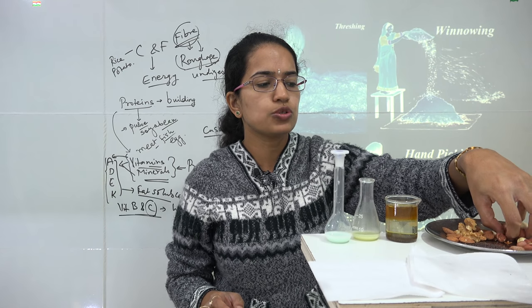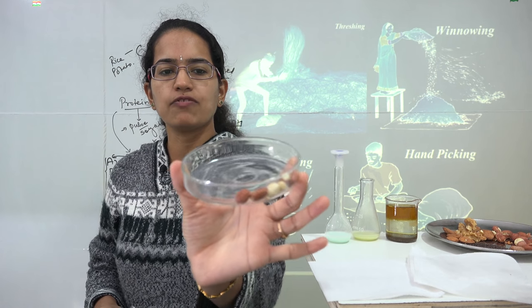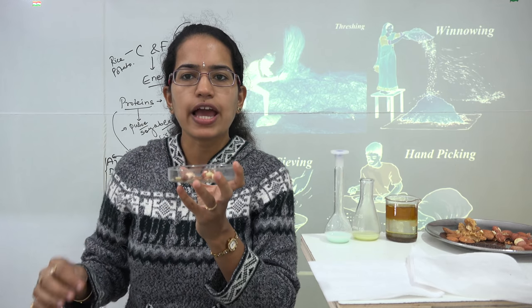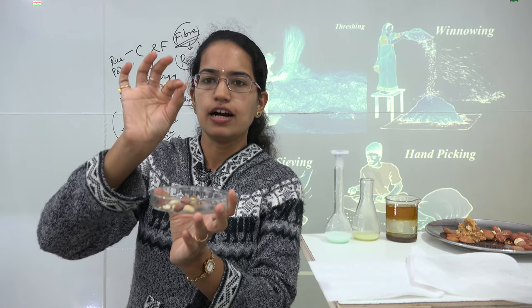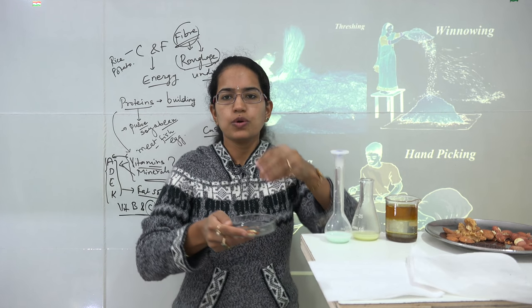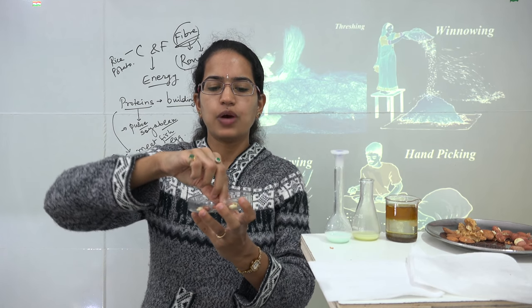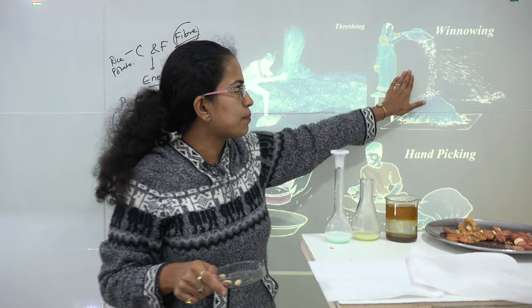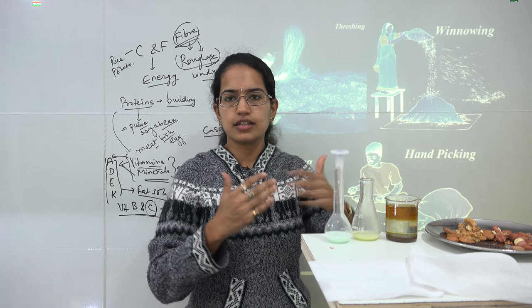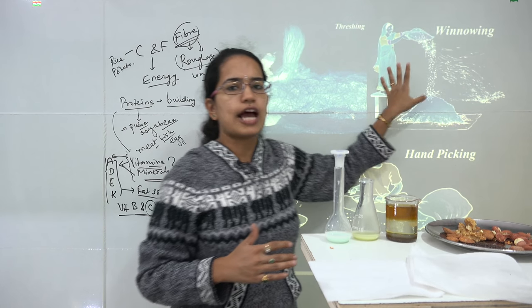The next method is winnowing, where you separate things based on weight. Using peanuts as an example — some have covers and some don't. When crushed and a blow of air is applied, the lighter covers flow away. In villages, people keep grains in a dish and blow air so the lighter impurities fly away and the solid heavier part remains. This is winnowing — it separates things based on density.